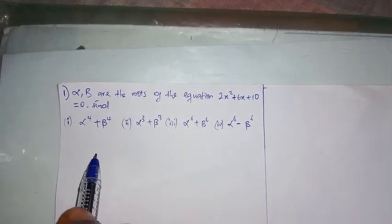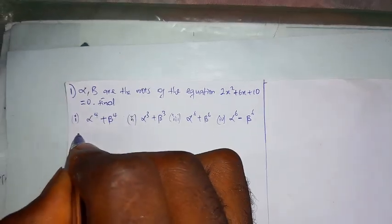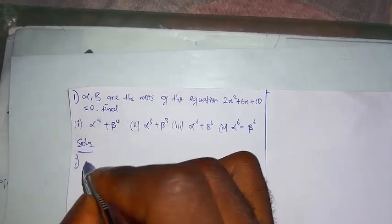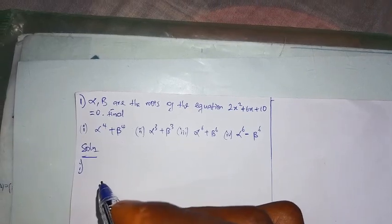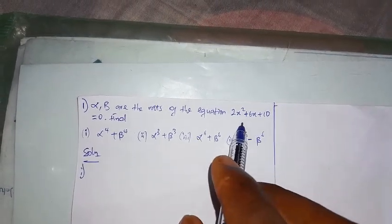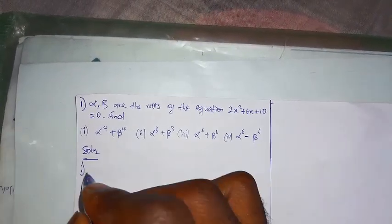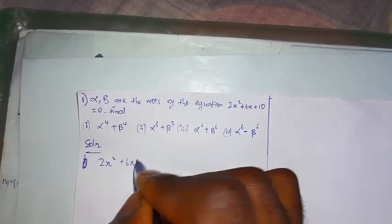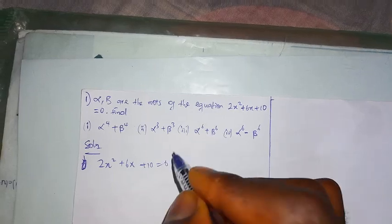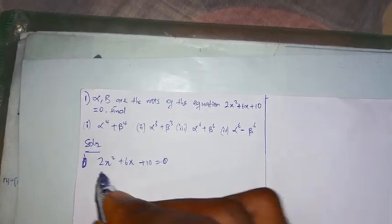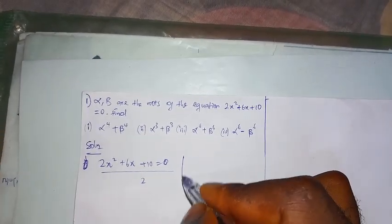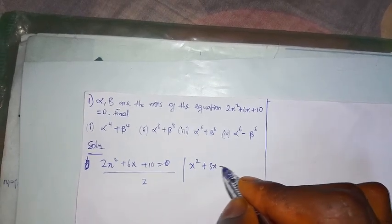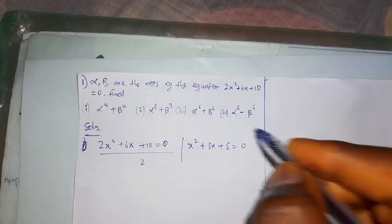For number one, the first thing we are going to do is get the roots of this equation as alpha and beta. I have it as 2x squared plus 6x plus 10 equals zero. I can divide through by 2 to reduce the equation, and that becomes x squared plus 3x plus 5 equals zero.